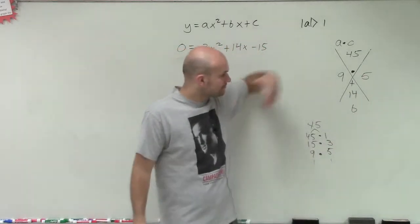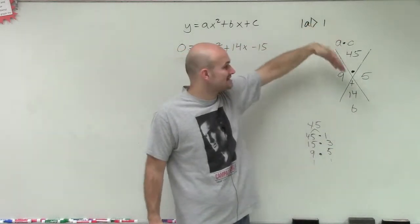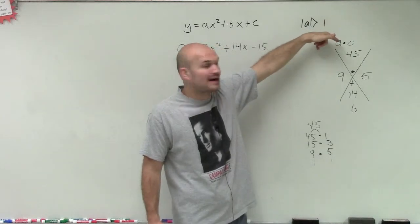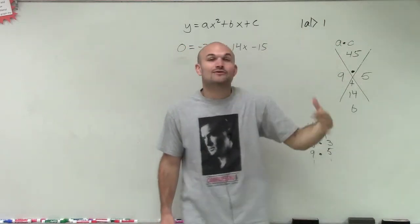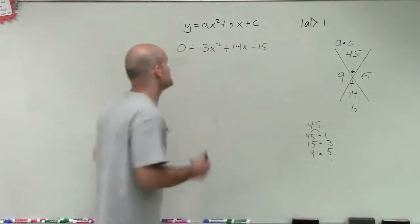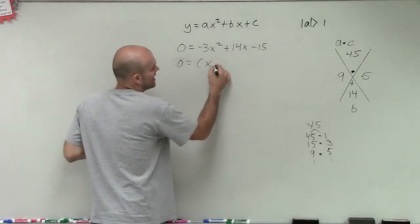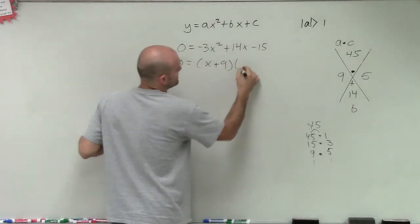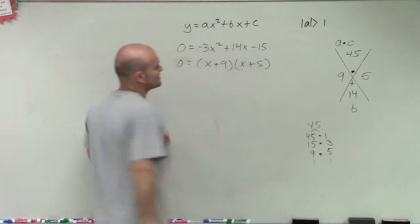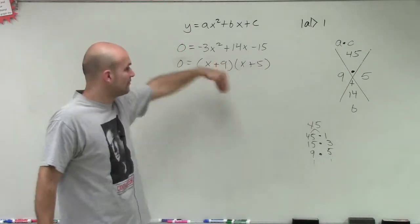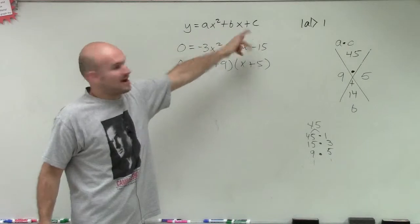All right. So now we've affected our C and B by multiplying by A. So 9 and 5 are not going to be our factors. We are not going to write 0 equals x plus 9 times x plus 5. Because if you multiply that out by using FOIL or any other method, you're not going to get this answer back.